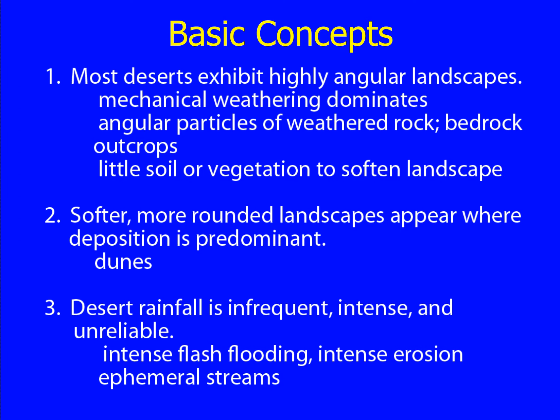Desert rainfall is infrequent, intense, and unreliable. It can create intense flash floods and intense erosion. It will create streams that are ephemeral — that is, here one time and then gone.